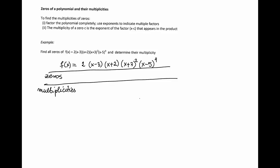So in my example, I have function f of x equals 2 times x minus 3 times x plus 2 times x plus 3 squared times x minus 5 to the fourth.